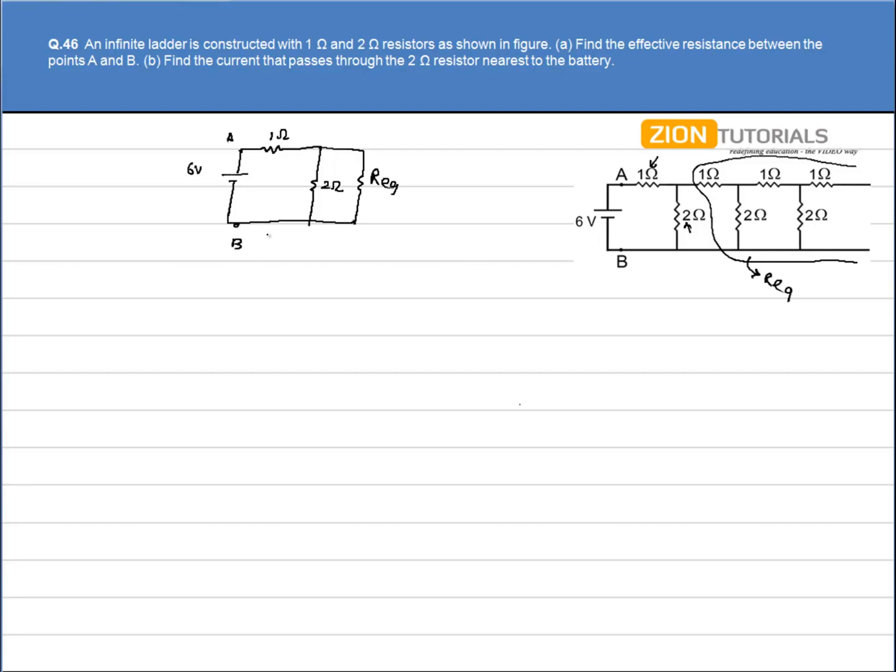Now to calculate the effective resistance, we have R equivalent and 2 in parallel. So let's say R prime that will be given by 2 R equivalent divided by 2 plus R equivalent. This equivalent is in series with this 1 ohm.